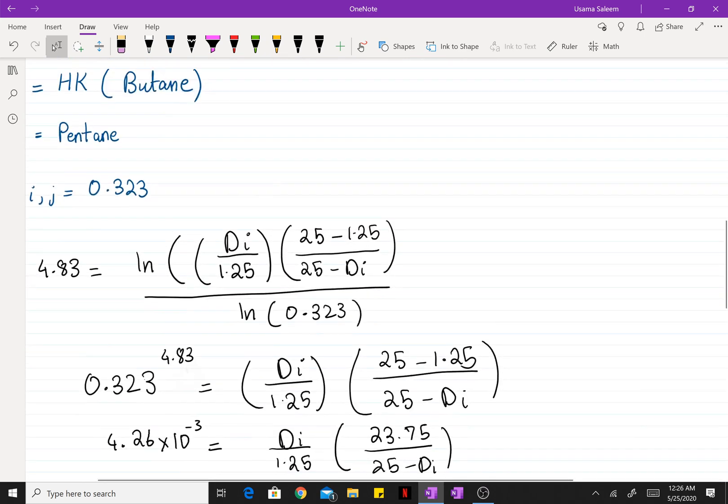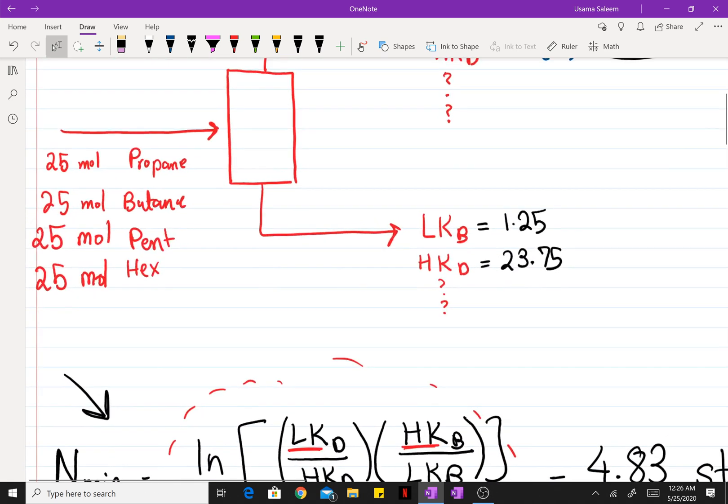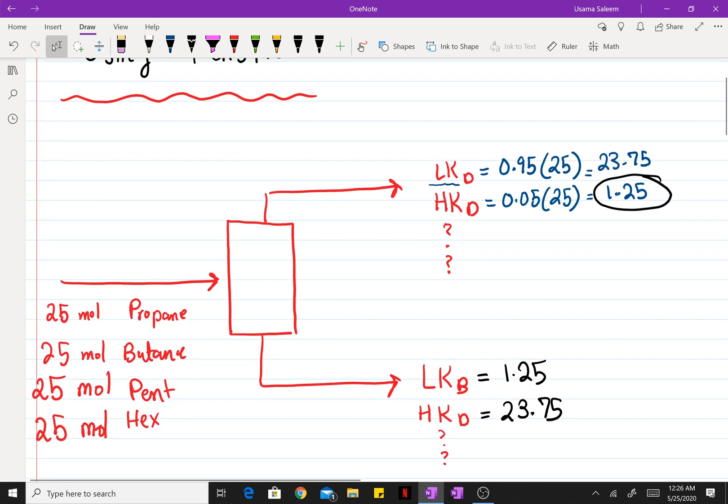So we did that for pentane, and we can repeat the same procedure for hexane. It doesn't matter how many components you have, the Fenske equation is gonna be used to calculate all the splits, and it can be extended to as many components as possible.